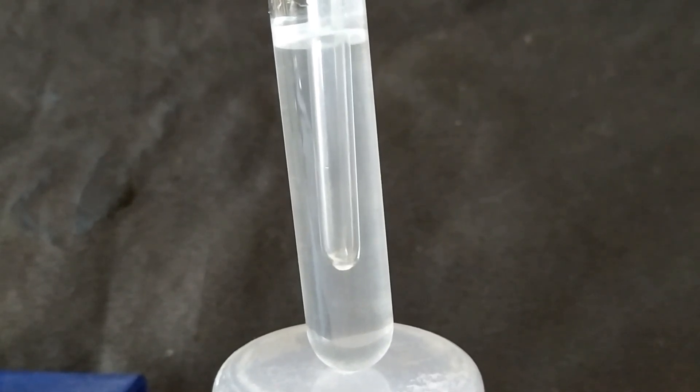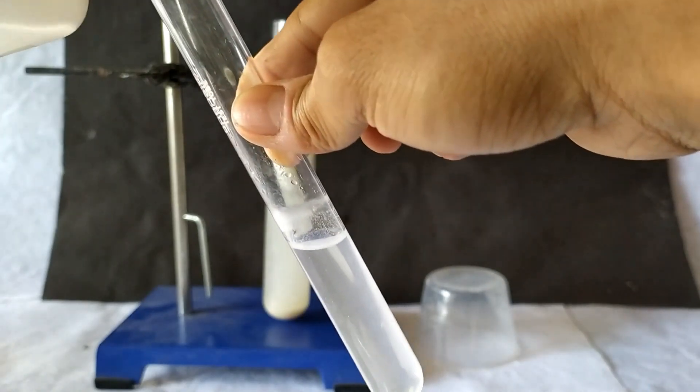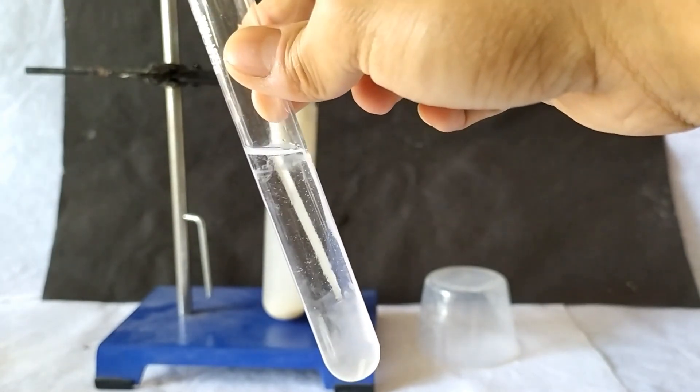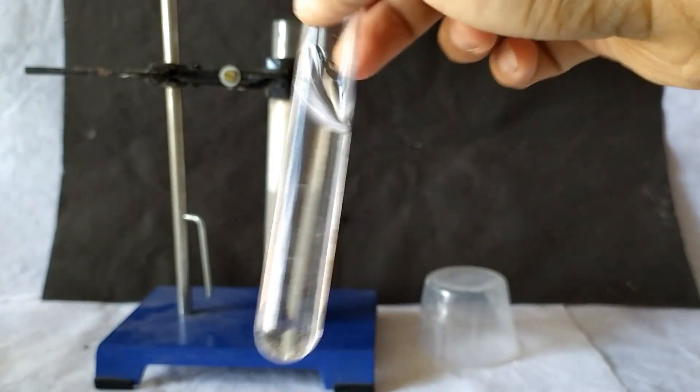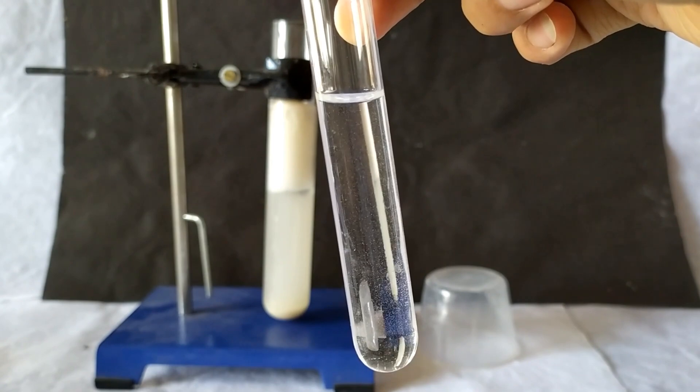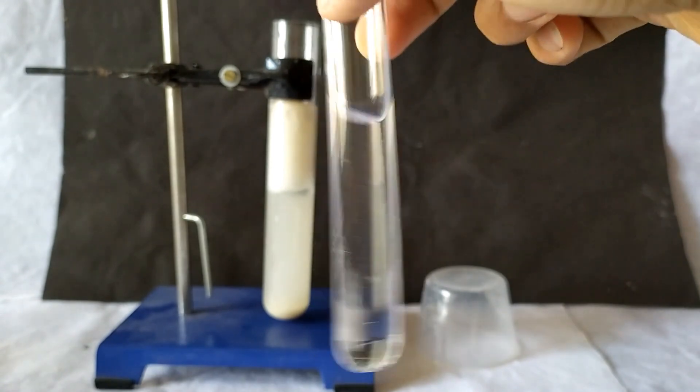At this point, disassemble the setup. First take the tube containing lime water and add 1% hydrochloric acid drop-wise to the tube and shake gently. The cloudy white precipitate dissolves completely, suggesting that the white precipitate is indeed calcium carbonate, which is a product of the reaction between carbon dioxide and lime water, which is calcium hydroxide solution.